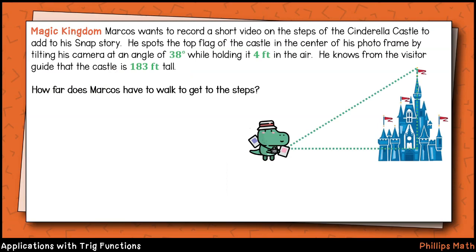Next, we head to Disney World where our friend Marcus plans to record a quick video for a snap story. He tilts the camera up 38 degrees while holding it four feet in the air. He sees from the visitor guide that the Cinderella castle is 183 feet tall. The question is, how far away from the castle is he? Well, we have the acute base angle of the right triangle and we have the height of the castle, but we're going to need to subtract 4 feet from its height to account for Marcos holding his camera up in the air.